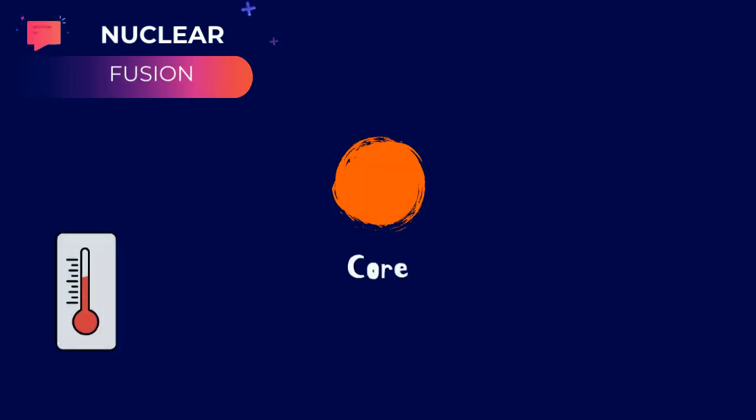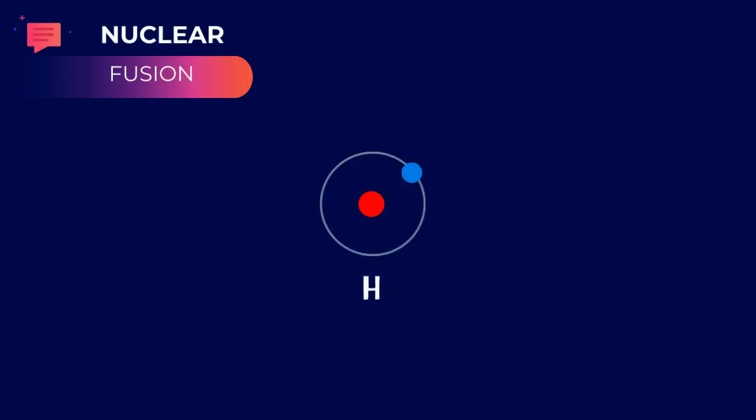Inside the core, it is a blazing 50 million degrees Celsius, even more in other stars. It consists of hydrogen and a few other heavier elements.